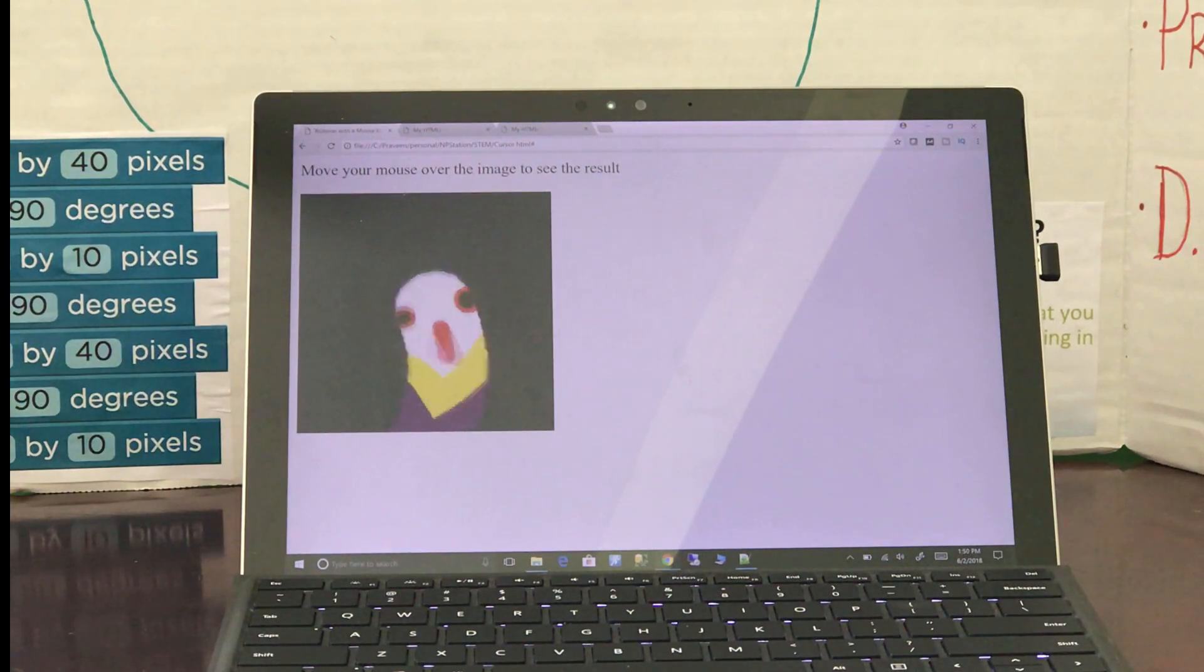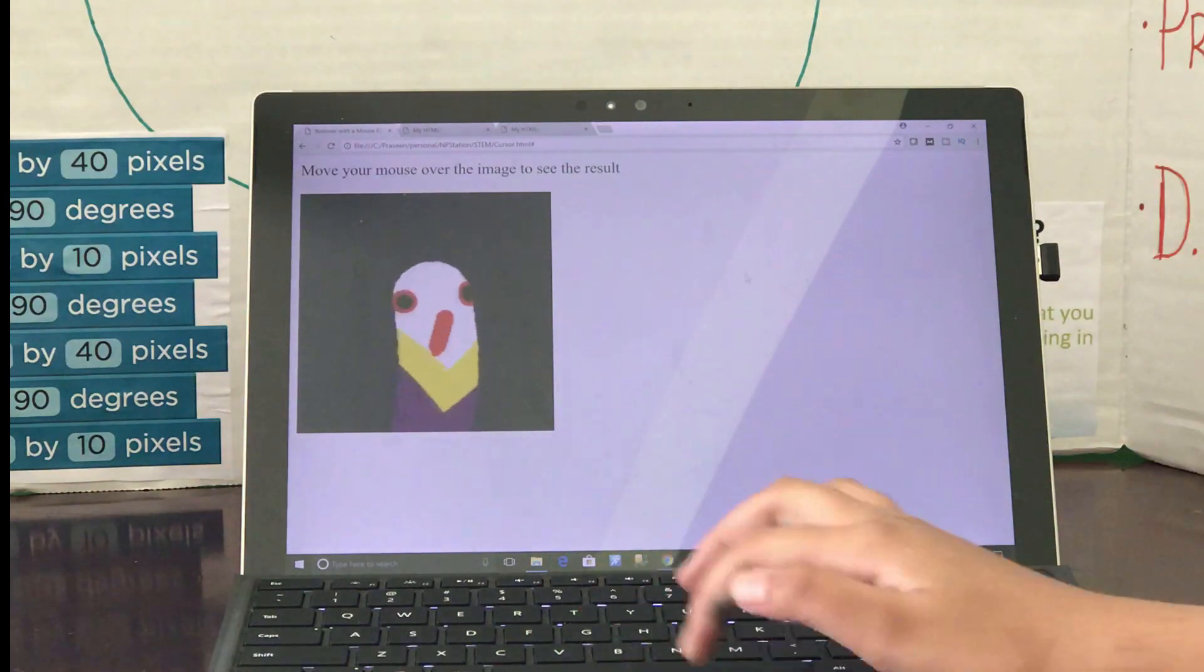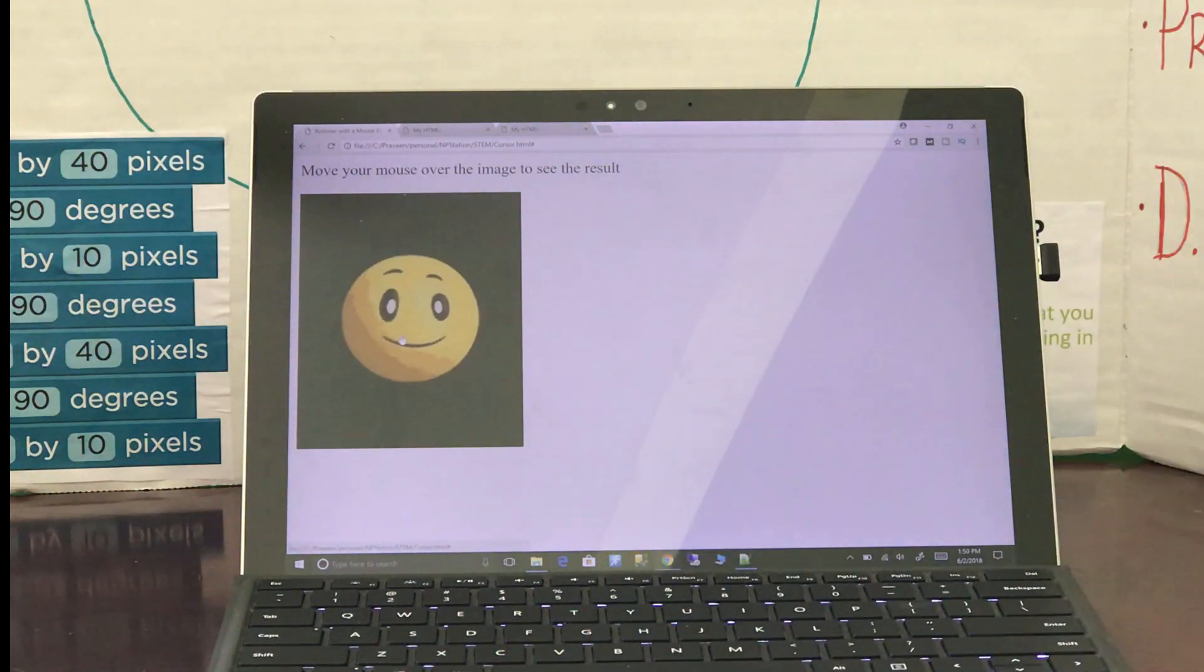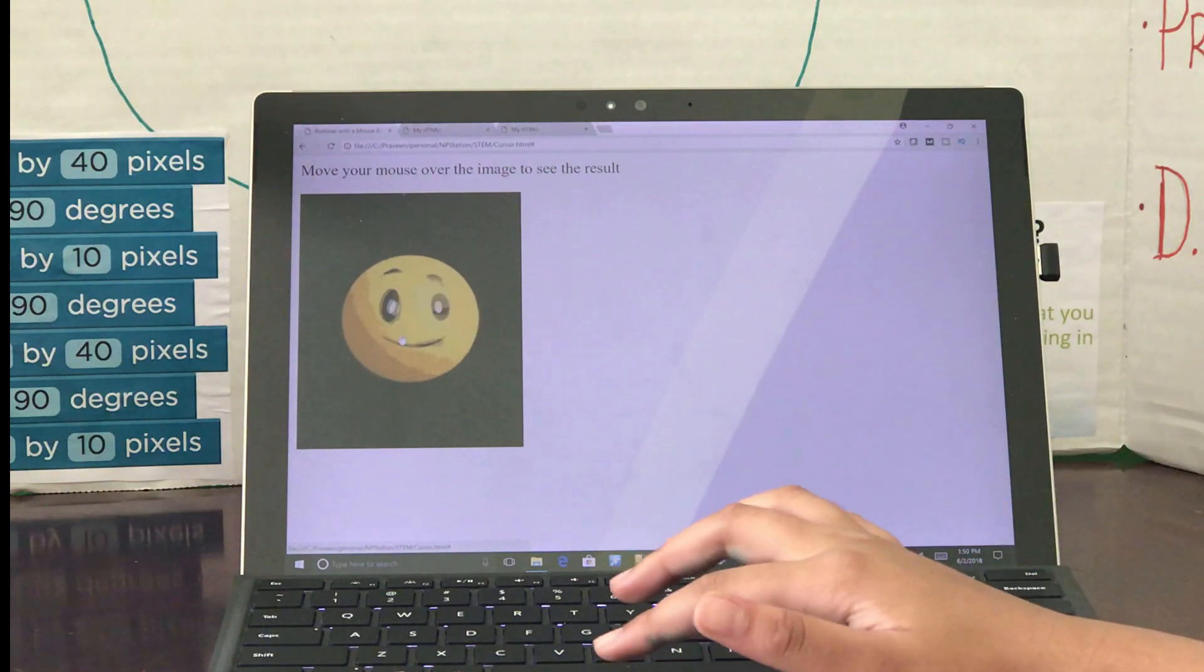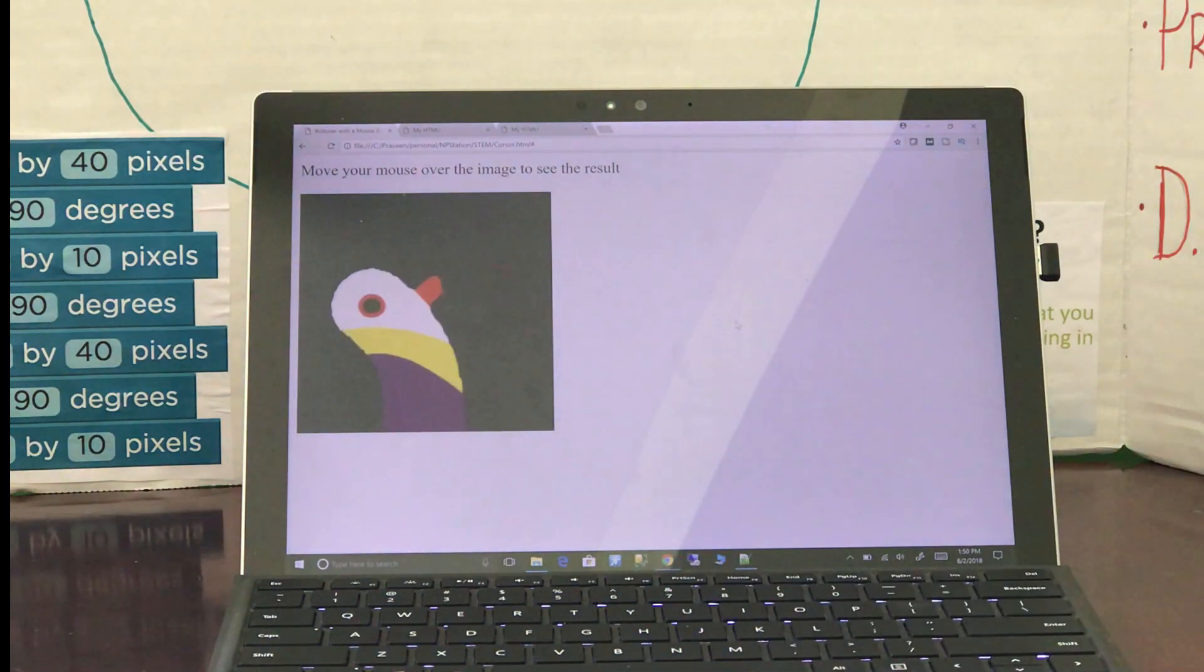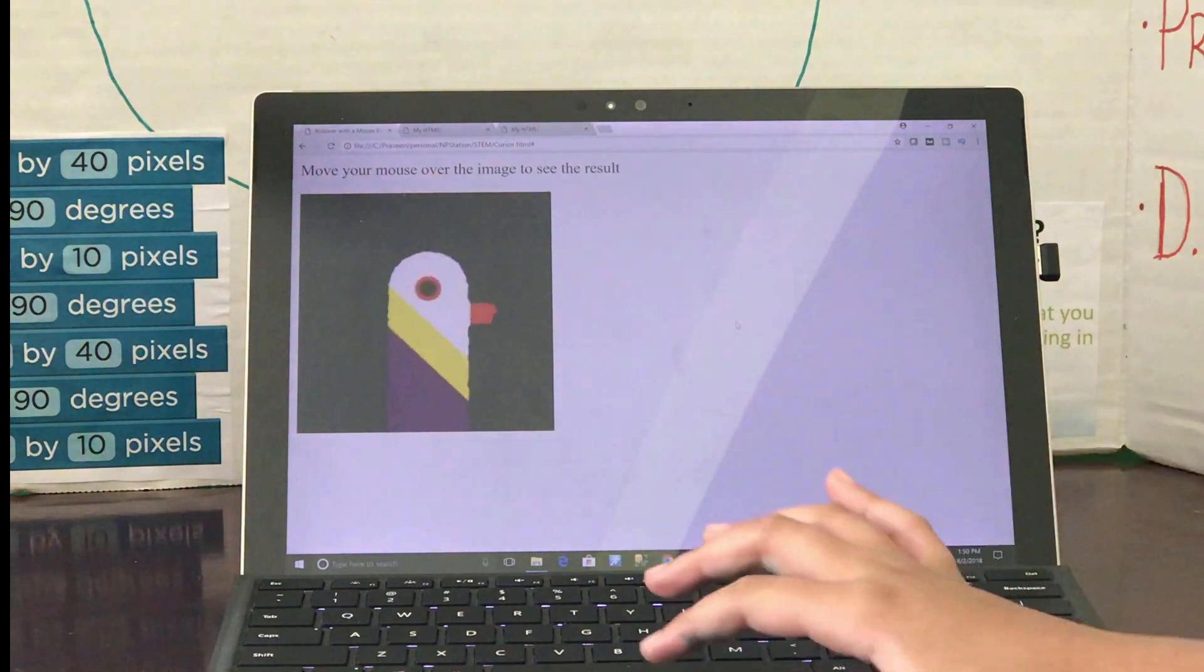So here is the project I did using JavaScript. The objective of this project is to change the image when we move the mouse cursor on top of the image, like so. When we move the cursor out, it shows back the original image. Now let's see the code I wrote for this project.